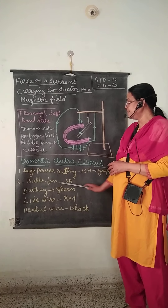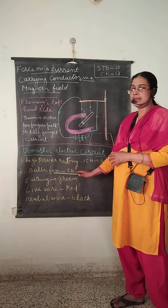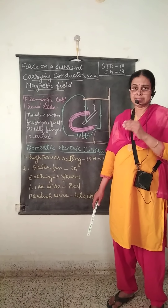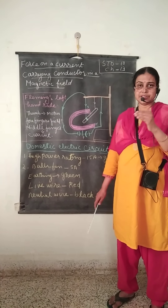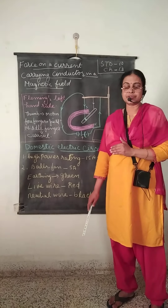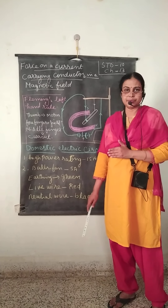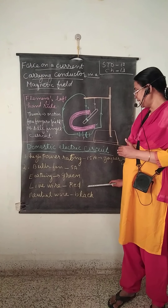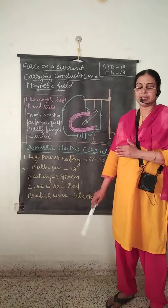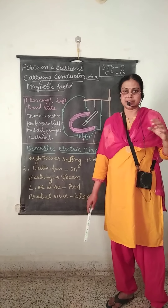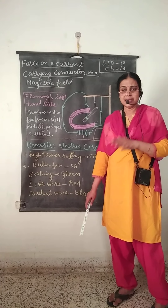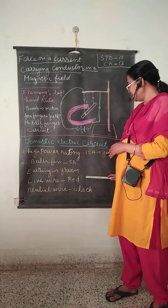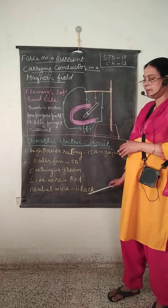A 5 ampere rating is used for bulbs, fans, etc. There are three different types of color-coded wires used with insulation: green is used for earthing, red is used for the live wire, and black is used for the neutral wire.